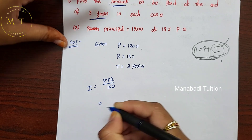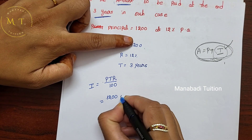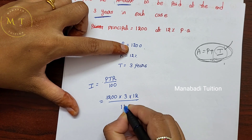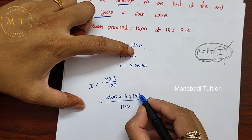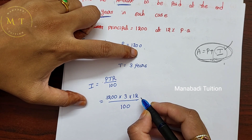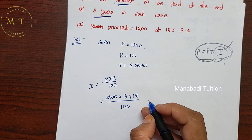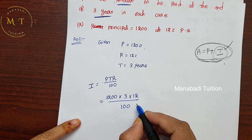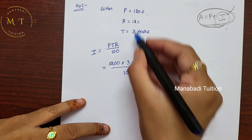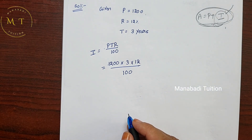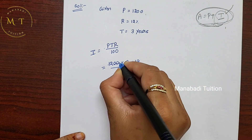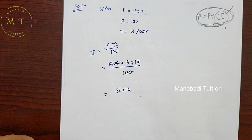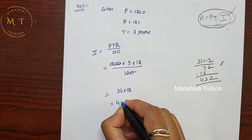Substituting values: P = 1200, T = 3, R = 12, divided by 100. Cancel two zeros. 12 into 3 is 36; 1200 divided by 100 is 12; 12 into 36 gives interest = 432.